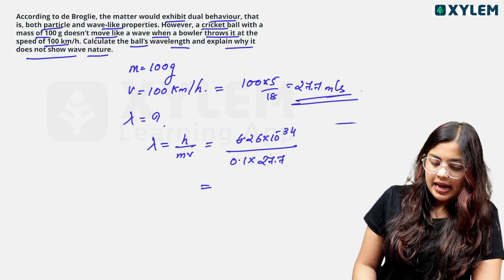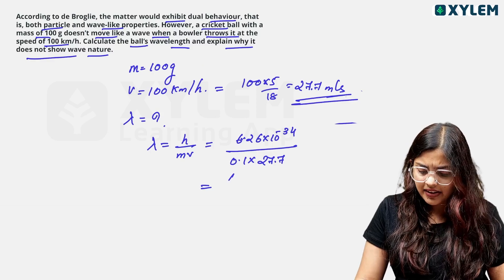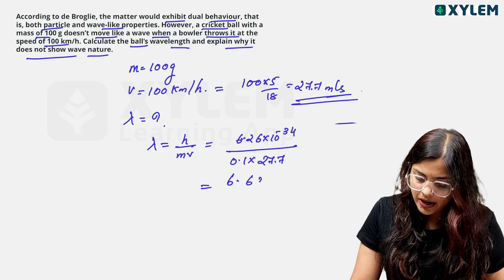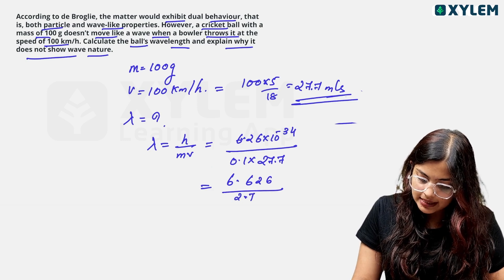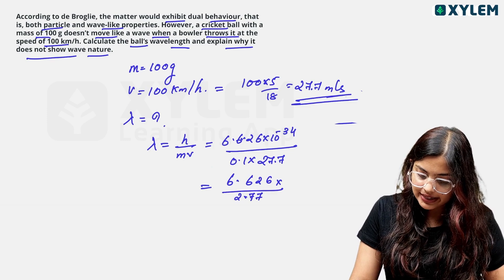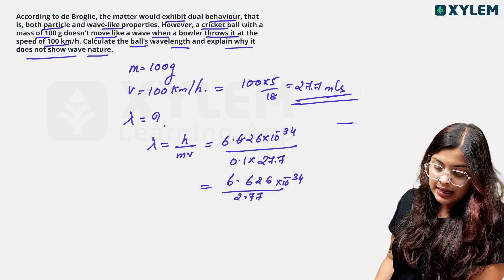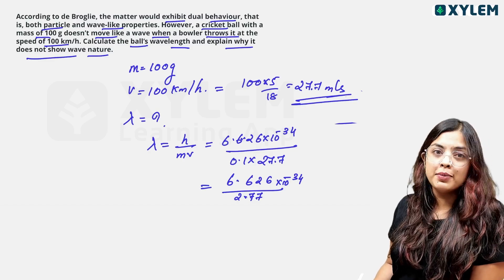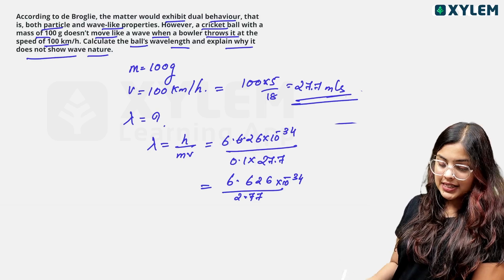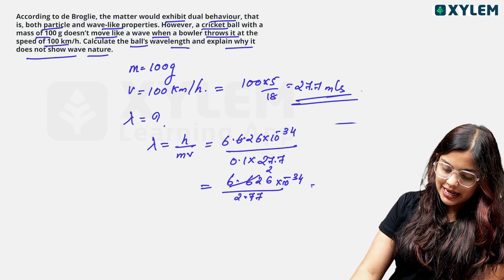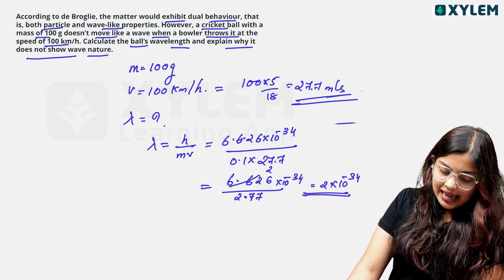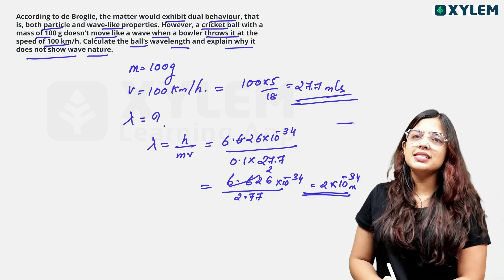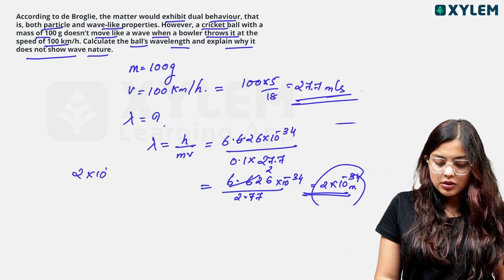The De Broglie equation is lambda equals h divided by mv. Planck's constant h equals 6.626 times 10 raised to minus 34. Mass m equals 0.1 kg and velocity v equals 27.7 meters per second. Substituting: lambda equals 6.626 times 10 raised to minus 34 divided by (0.1 times 27.7). We get 0.1 times 27.7 equals 2.77. Then 6.626 divided by 2.77 gives approximately 2.4, so lambda is approximately 2 times 10 raised to minus 34 meters. This wavelength is extremely small, which is why the cricket ball does not show wave nature.